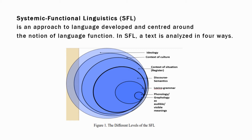Firstly, we have to know about Systemic Functional Linguistics. Systemic Functional Linguistics, or SFL, is an approach to language developed and centered around the notion of language function. In SFL, a text is analyzed in four ways: as context, as semantics, as lexicogrammar, and phonology.